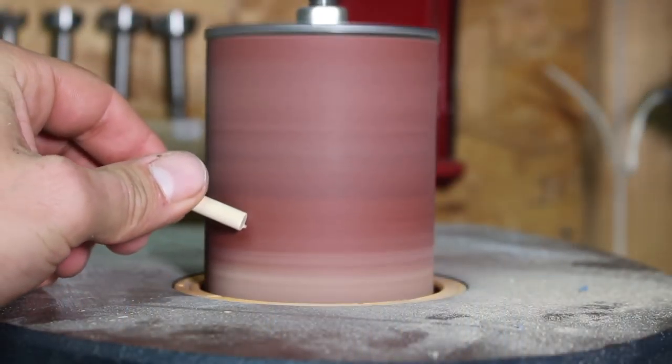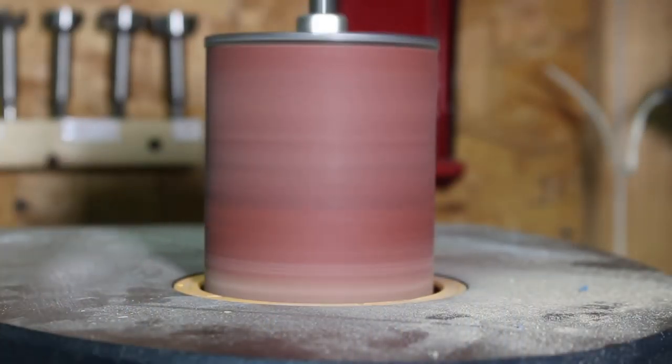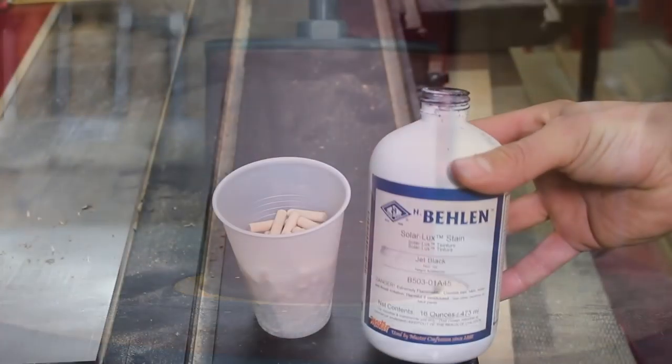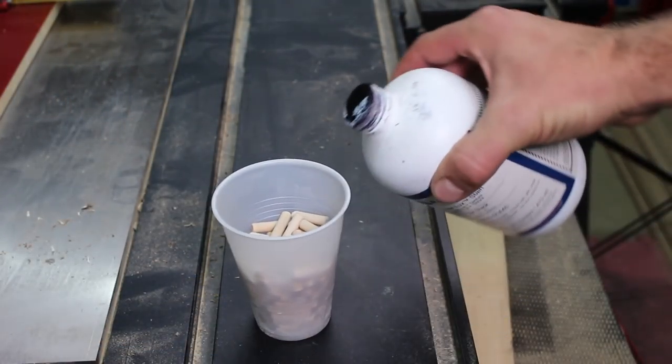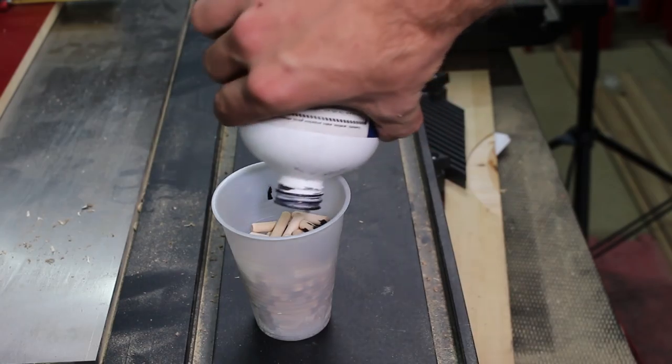I cut 1 inch birch dowels at the table saw and use the oscillating spindle sander to round over the edges to make going in and out easier. I then use black solar lux stain to color them black.